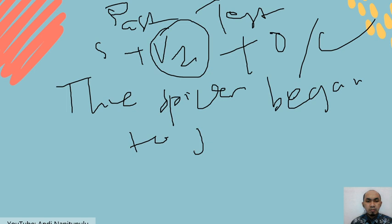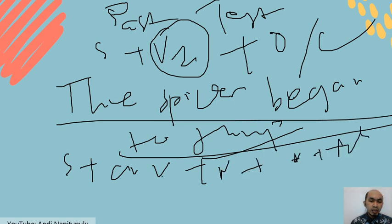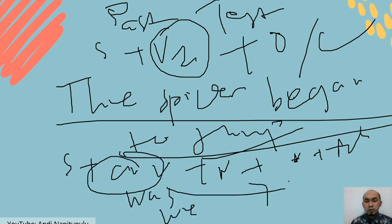For example: 'The spider began to jump' — that's using past tense in the movie review. You can also use the nominal form for past tense: subject + auxiliary verb (was/were) + noun/adjective/adverb. 'Was' is used with I, he, she, and it.